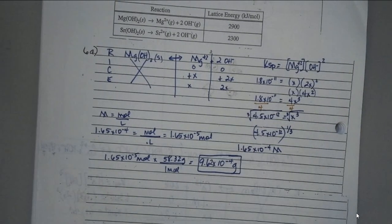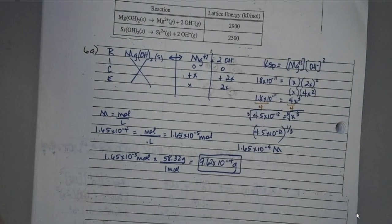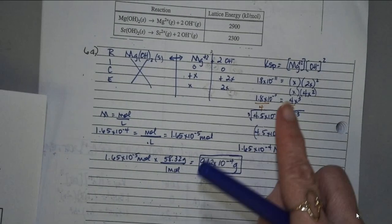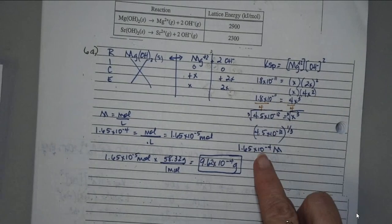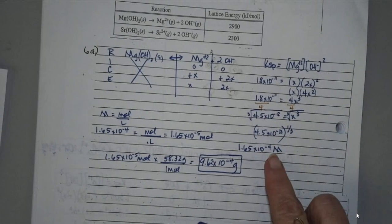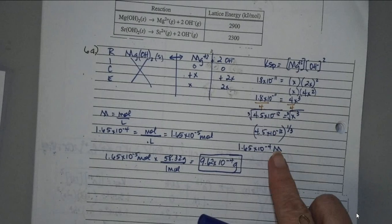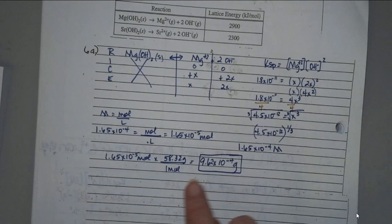So what they gave you points for on this. You got one point for calculating the solubility. They gave you one point for this 1.65 times 10 to the negative 4 molar. That was a point. And then one point for calculating the correct mass. So this was only two points. That was kind of mean of them. So two points on that.